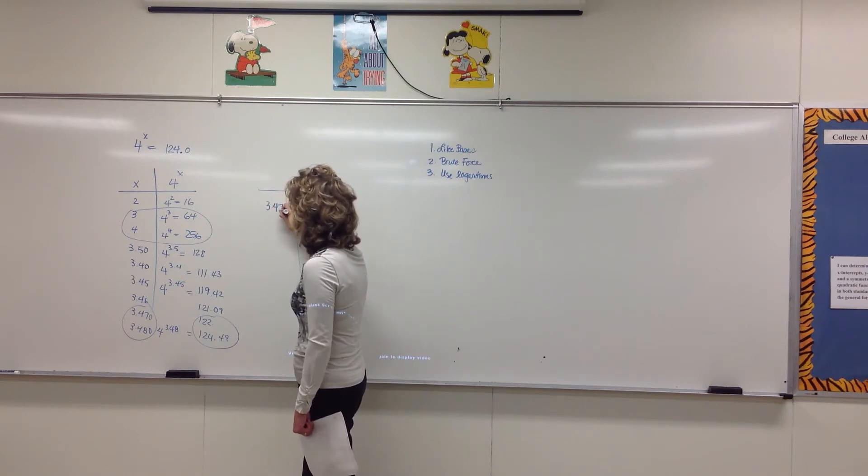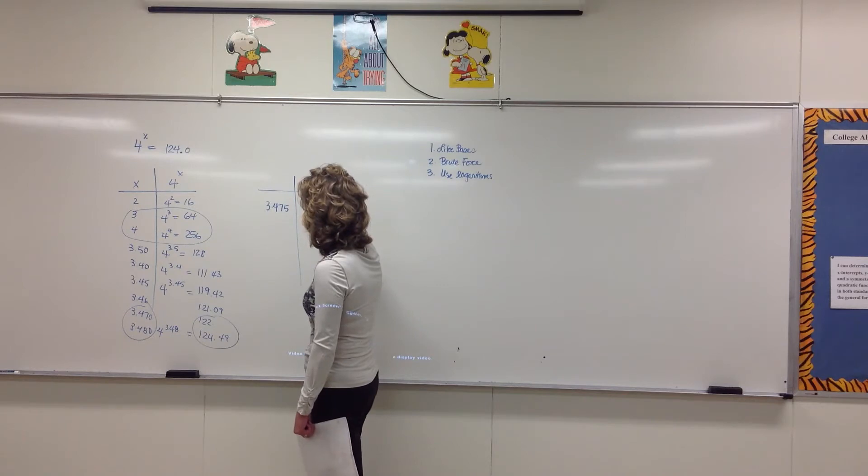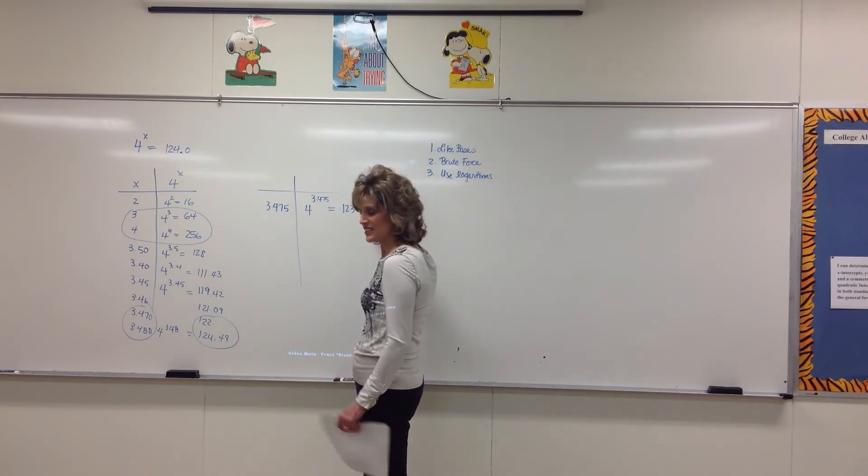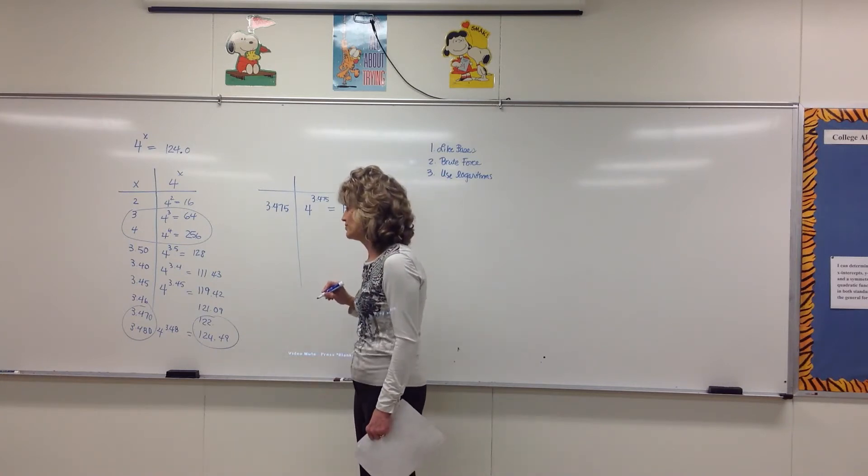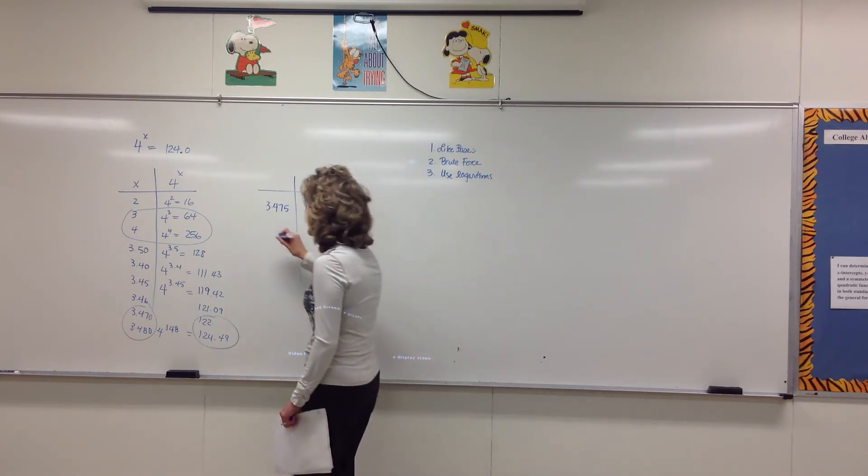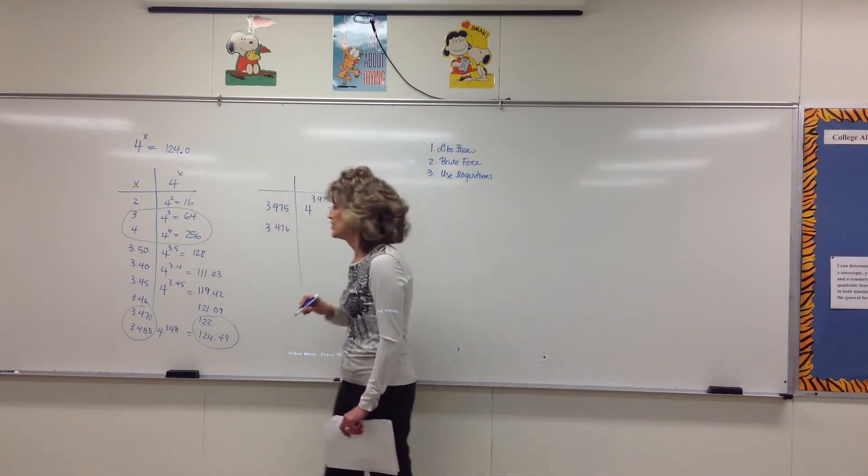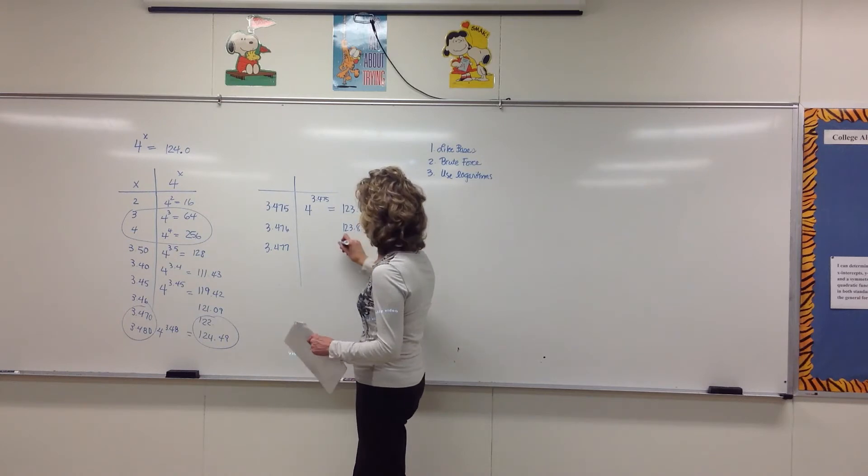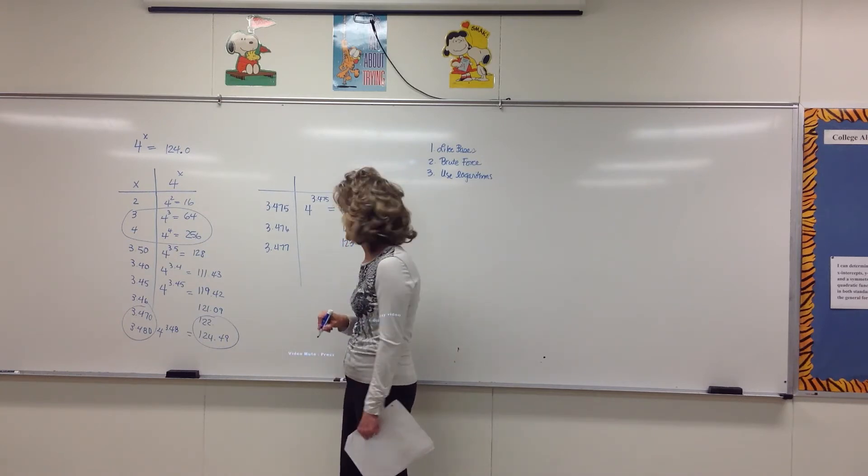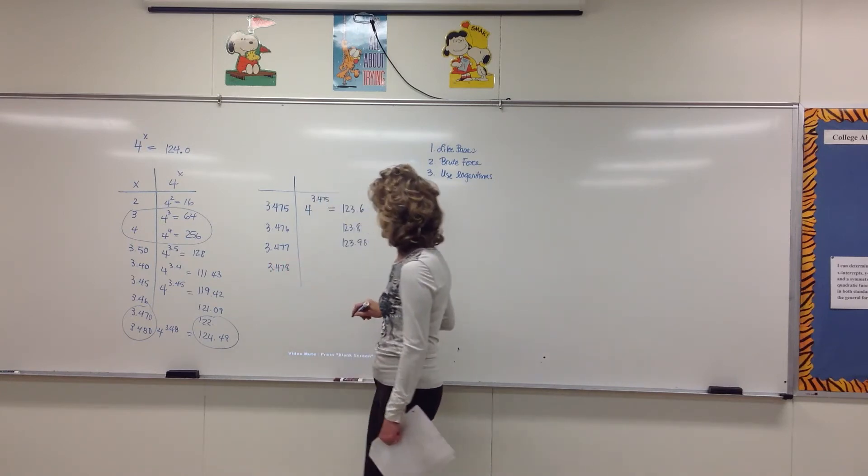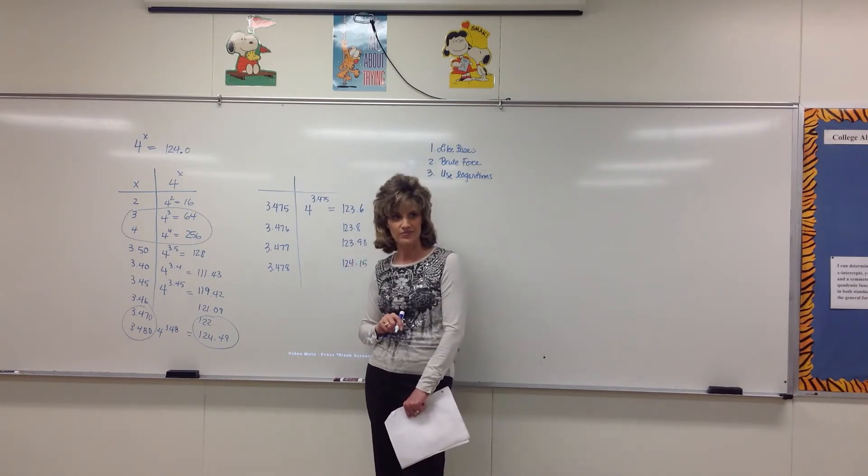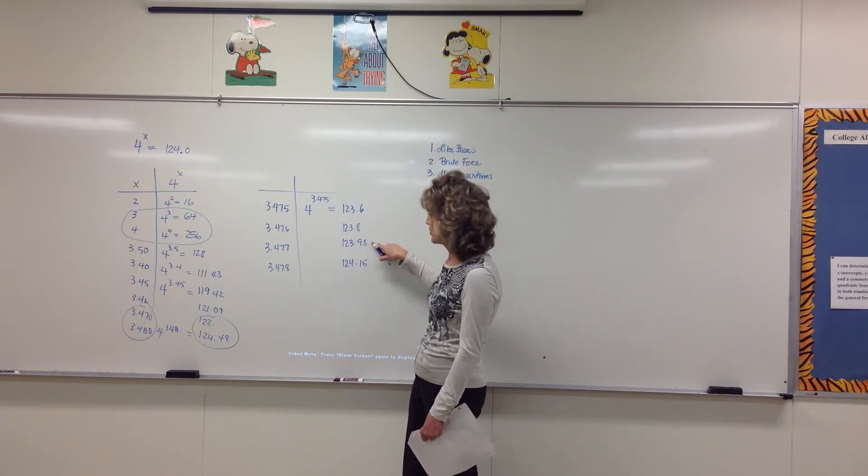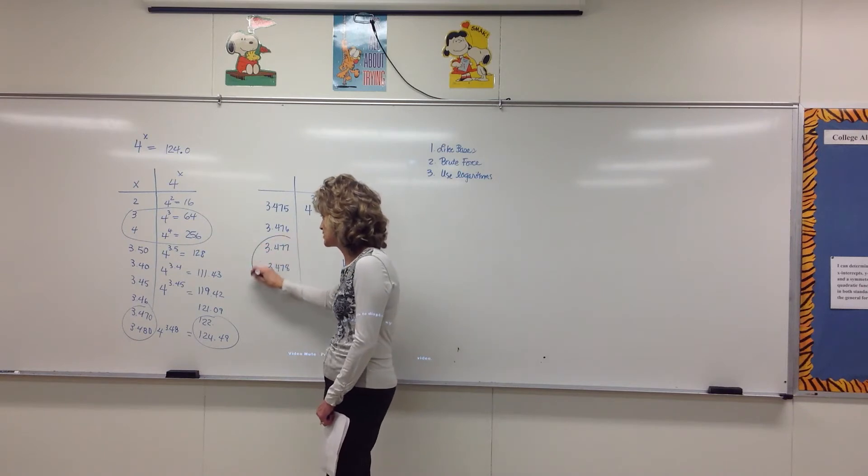And let's go with something between them. So let's try 3.475. Type into your calculator, 4 raised to the power of 3.475. Somebody tell me what you get. 123.96. A little too small. And so we need to jump it up. Try 3.476. 123.8. Try 3.477. 123.98. Still a little small. Try 3.478. 124.15. You see where we are? I want you to get it close enough to give me 124.0. So we are between, 124.0 is between 123.98 and 124.15, so that means the exponent has to be something between these two.